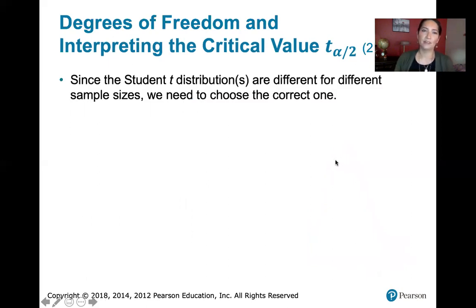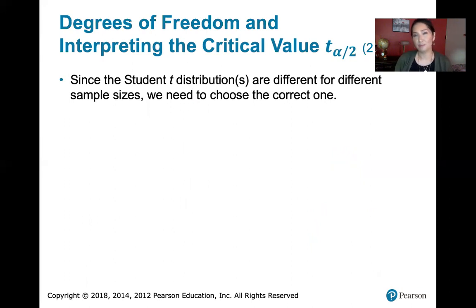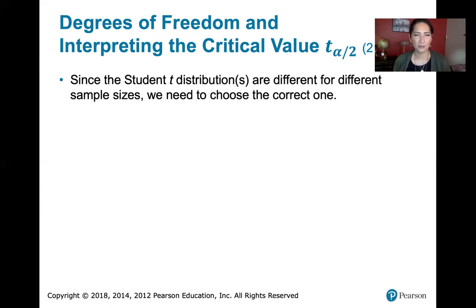The student t distribution is different from sample size to sample size. As n changes, we need a different distribution because the shape changes. There are infinitely many student t distributions — one for each possible sample size.